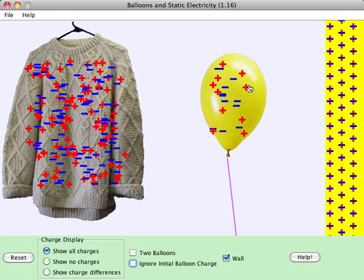The protons are represented, some of them at least, by these positive charges, the little pluses, and the little minuses represent electrons. And this wall over here has both kinds, stuck together basically. The balloon has both kinds. The sweater has both kinds.